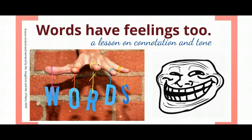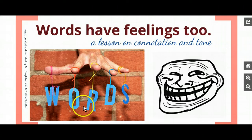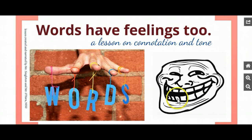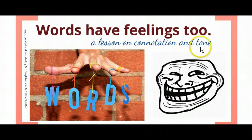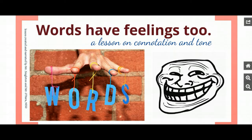Today you're going to be looking at a lesson on two very important terms for both reading and writing, and those two terms are connotation and tone. Today's lesson is about how words actually have feelings too, and they have feelings attached and associated with them. Those feelings attached to certain words create something called tone that you can identify when you read different texts or that you can create when you're writing your own story.